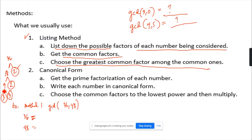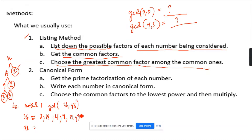So the factors of 36 are: 2 times 18, 4 times 9, 12 times 3, 36 times 1, and 6 times 6. So all the factors of 36 have been listed.